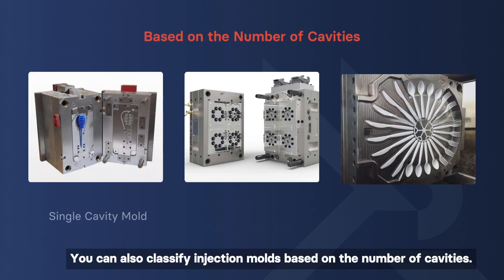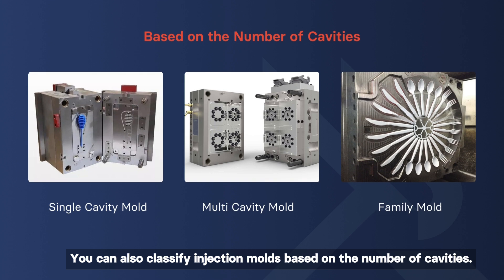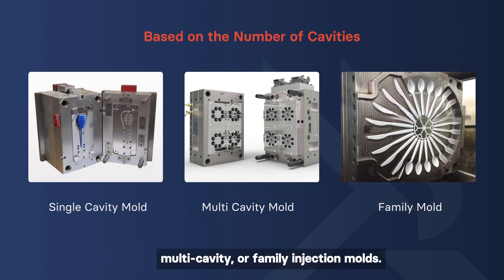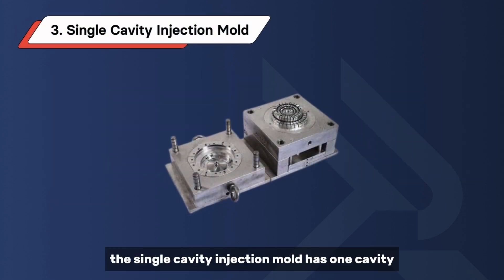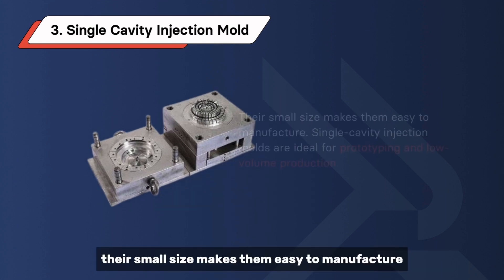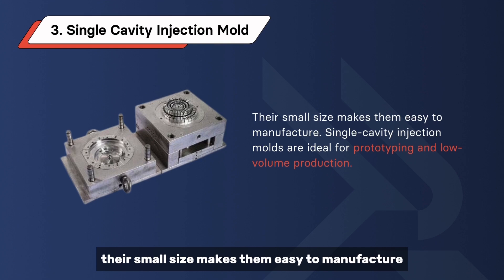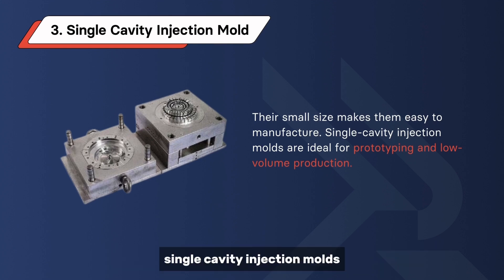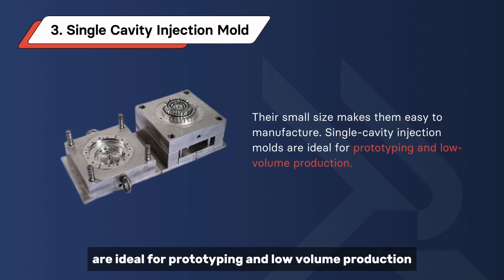You can also classify injection molds based on the number of cavities. It can come as single cavity, multi-cavity, or family injection molds. As the name implies, the single cavity injection mold has one cavity, hence it produces one part at a time. Their small size makes them easy to manufacture. Single cavity injection molds are ideal for prototyping and low-volume production.